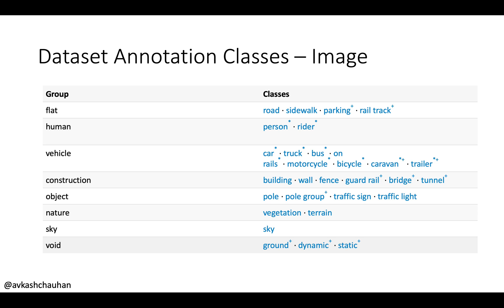We also have objects like trash cans — in North America we have newspaper boxes — which fall into their own area. Then we have nature: vegetation, terrain, and what cars really see while driving, which depends heavily on where the data is collected. You can see sky and finally ground, dynamic and static and other kinds. This is very important to understand how much information you're adding to your dataset.